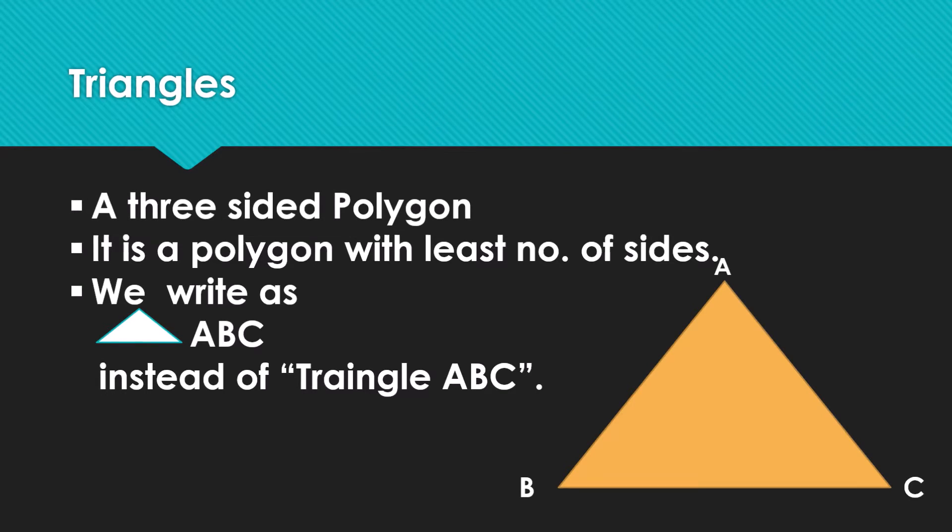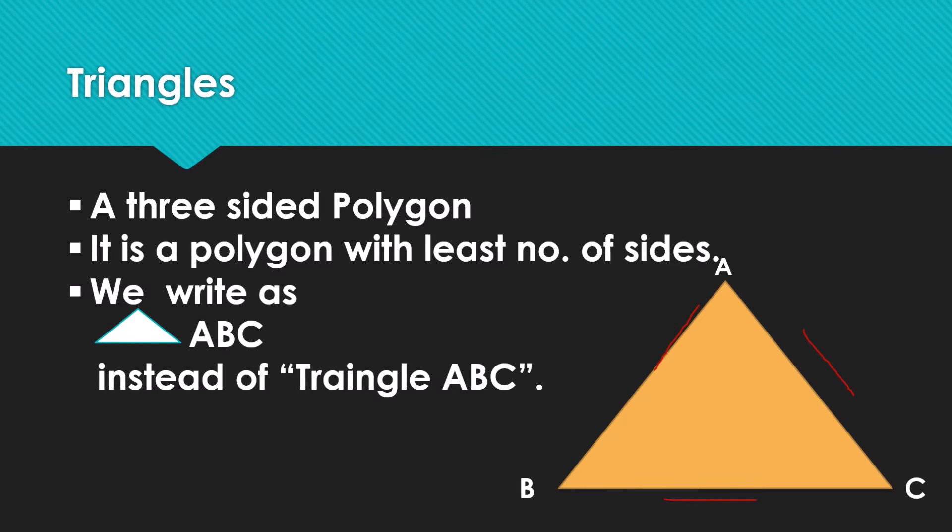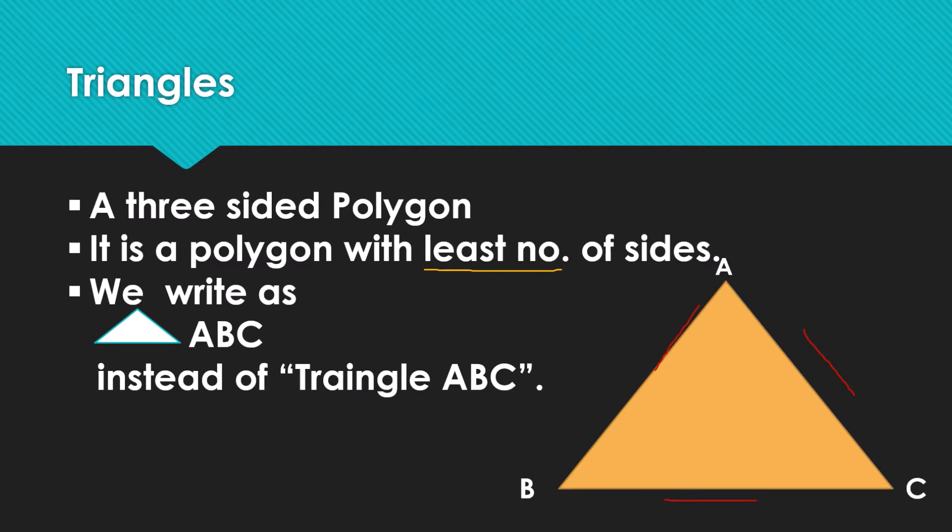Our first topic is triangle. A triangle is basically a three-sided polygon. You can see that it has three sides: AB, BC, and CA. It is a polygon with the least number of sides, because with less than three sides it is not possible to construct a polygon.